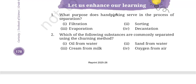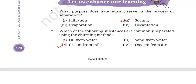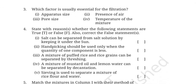Number one: What purpose does handpicking serve in the process of separation? When you are separating the impurities using the method of handpicking, basically what we are doing is sorting. Number two: Which of the following substances are commonly separated using the churning method? Using the churning method, we separate cream from milk.